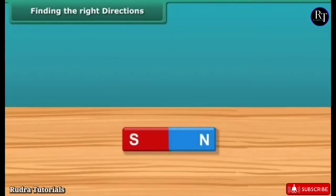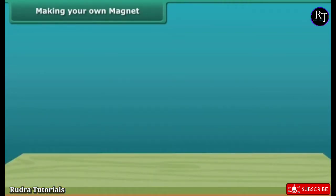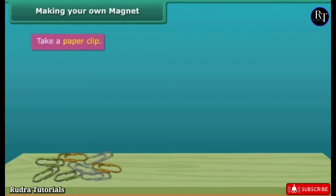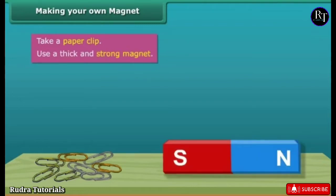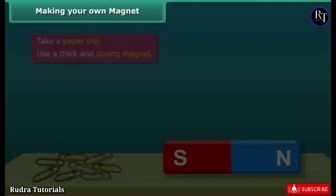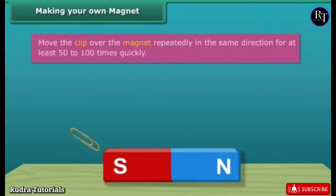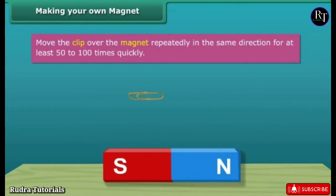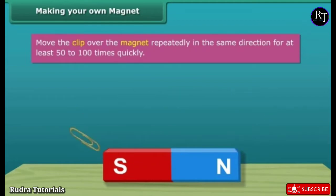Making your own magnet — let us look at the steps to create your very own magnet. Take a paper clip and use a thick and strong magnet. Move the clip over the magnet repeatedly in the same direction. Perform this step 50 to 100 times. The movement needs to be quick.